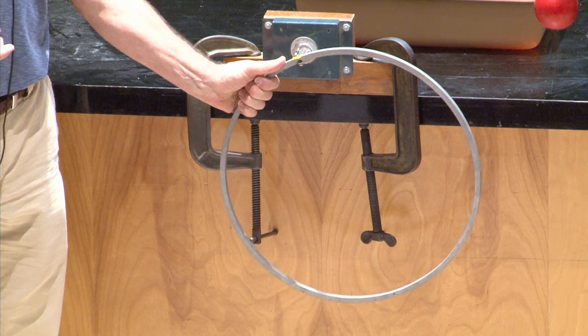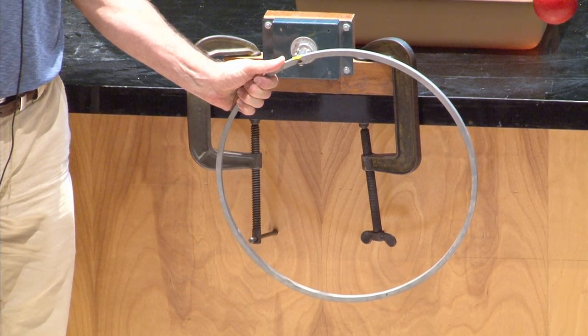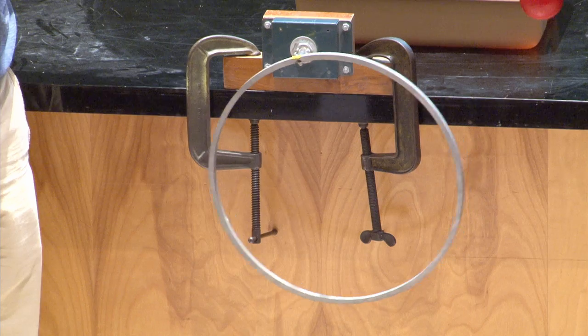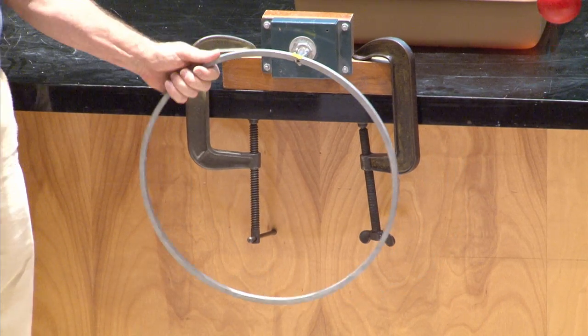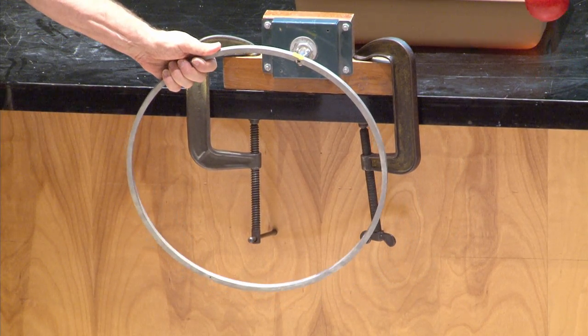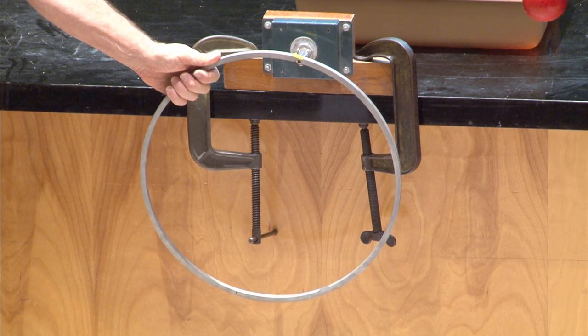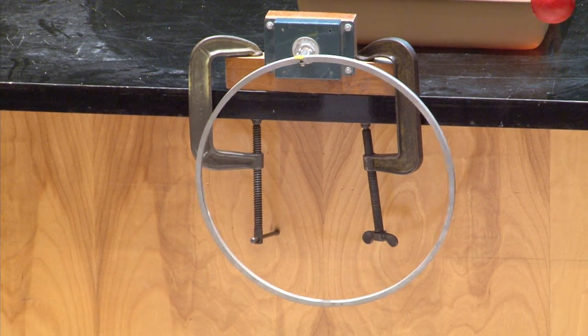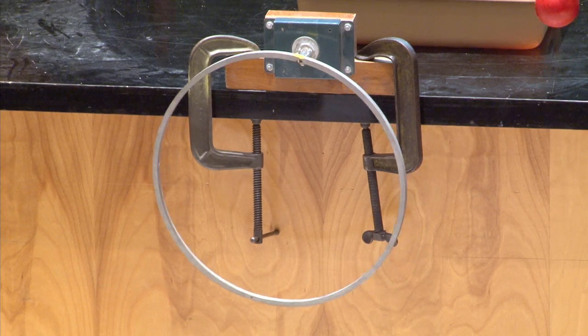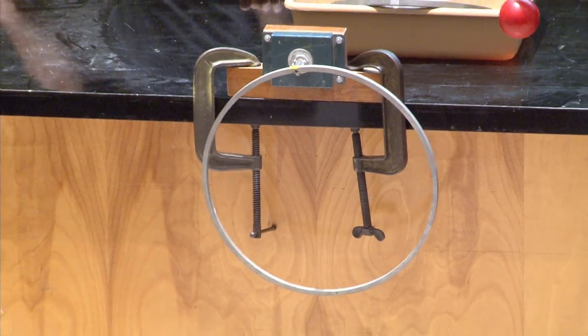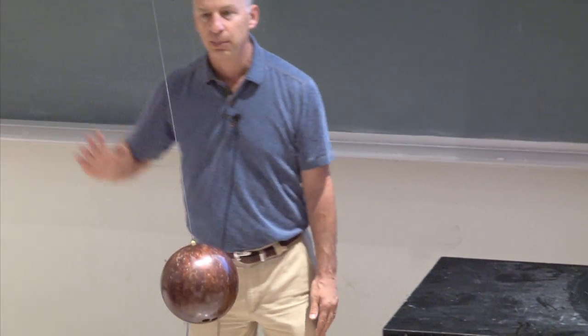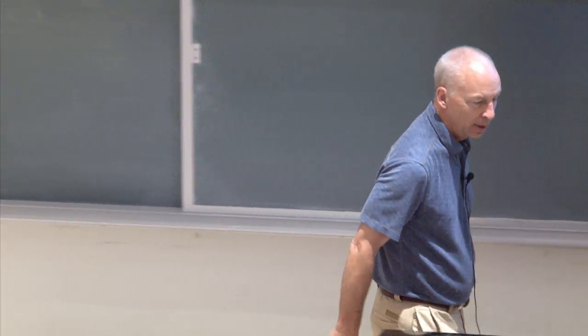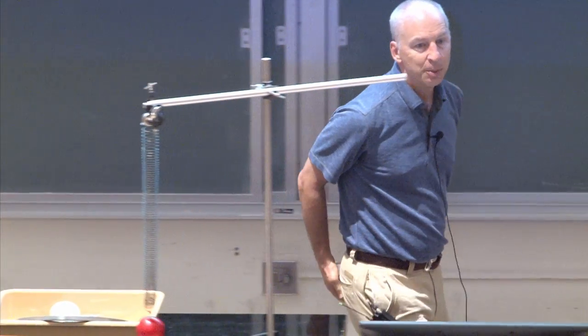But if I move it away from equilibrium, if I move it counterclockwise, then there's a clockwise restoring torque. If I rotate it clockwise away from equilibrium, then there's a restoring torque that is counterclockwise that tries to bring it back to equilibrium. In either case, it rocks back and forth the same way this bowling ball goes back and forth. Oscillates about the equilibrium value.